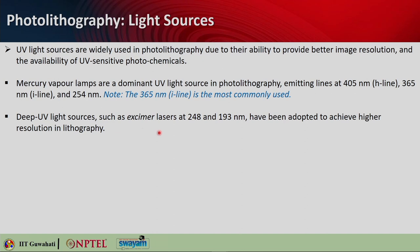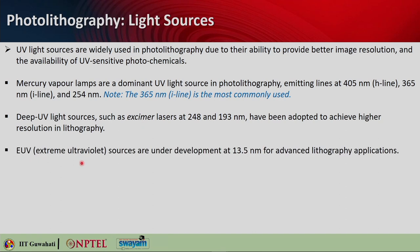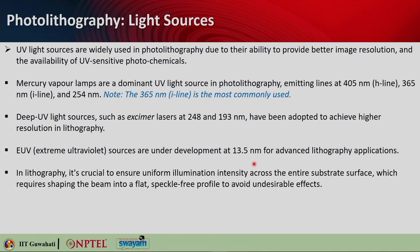Deep UV light sources such as excimer lasers operating at 248 and 193 nm are also used to achieve higher resolution — shorter wavelengths give higher resolution. Excimer lasers are short for excimer dimer lasers; they generate intense ultraviolet light using excited dimers or molecules, combining noble gases and reactive gases to create a laser medium. Extreme UV sources operating at 13.5 nm are also under development and will be used for advanced lithography applications.